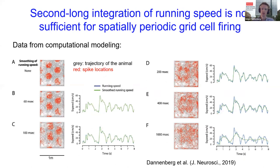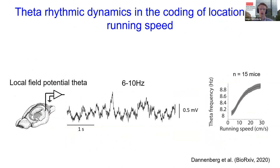This finding has implications for computational models of grid cell firing, because if the speed code by firing rate requires integration over seconds, the question is what happens to the regular hexagonal firing patterns of grid cells. We tested this using a model of grid cells and feeding in speed information. The spatial period of grid cell firing was largely disrupted when running speed information was integrated over time windows larger than 200 milliseconds.